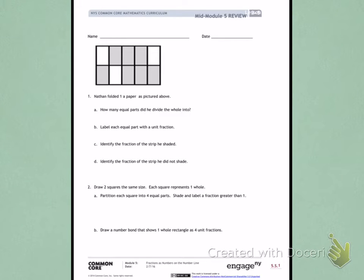This is the mid-module 5 review, page 1. Number 1. Nathan folded one piece of paper as pictured above.